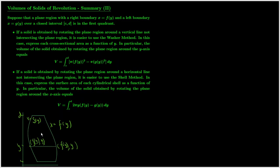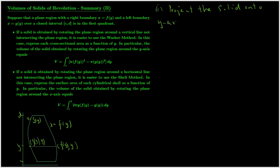Before we do anything, you need to imagine the shape of the solid — that's the plane region rotated around the vertical axis. After getting that, we follow the step procedures mentioned before. In step one, we get the interval. We project the solid onto the y-axis, the vertical axis, and we get the interval from c to d.